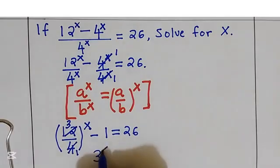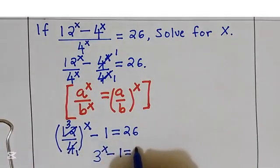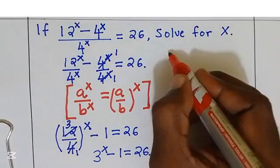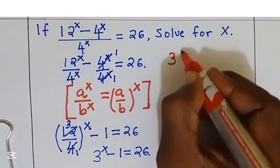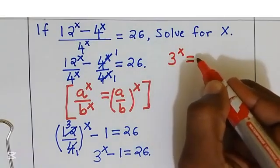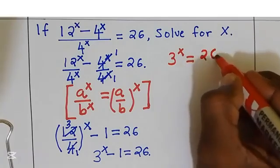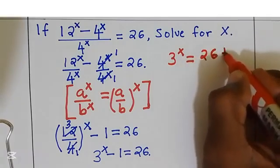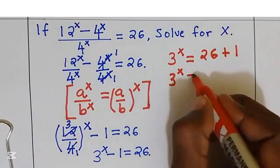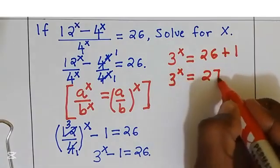So 3 power x minus 1 is equal to 26. I'm going to add 1 to both sides. That gives us 3 power x is equal to 26 plus 1, which is 3 power x equals 27.